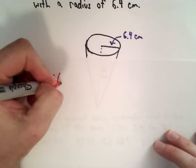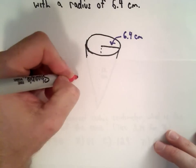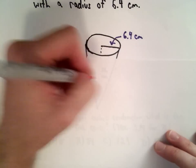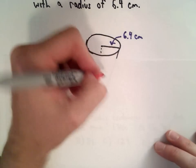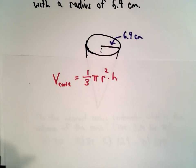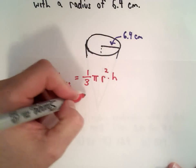So the volume of a cone, the volume of the cone is equal to one-third multiplied by pi multiplied by the radius squared multiplied by the height. So this is a good problem for a calculator.